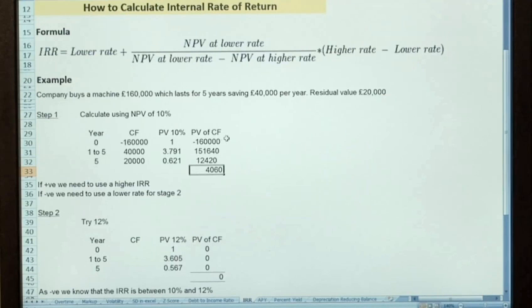So I'm saying here that I've got a present value of these cash flows of £4,060. So at 10% I'm £4,060 and I've said, as you can see below, if we have a positive outcome I then need to use a higher IRR, so a higher rate for the second bit of the calculation because obviously the IRR will be when it's zero. If it was negative we need to use a lower rate for stage two.